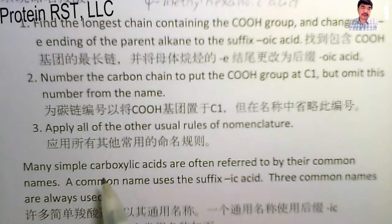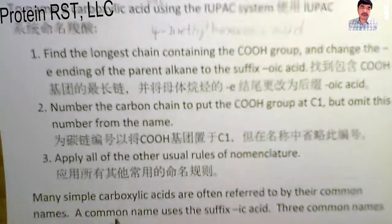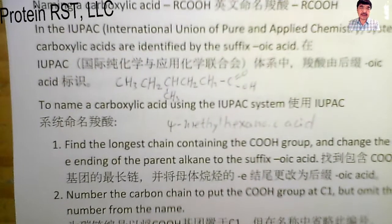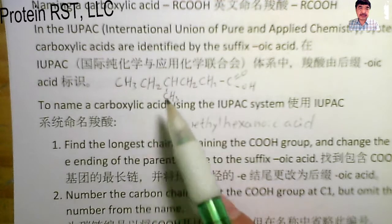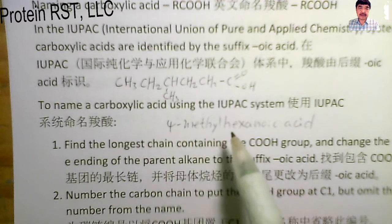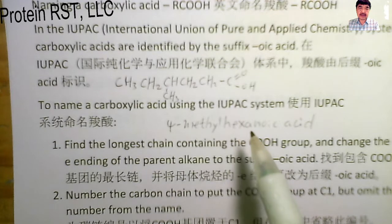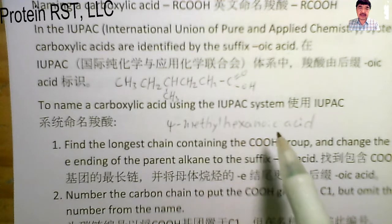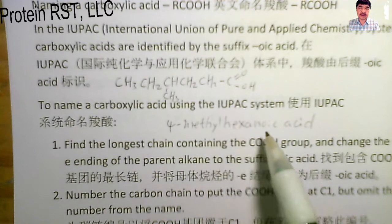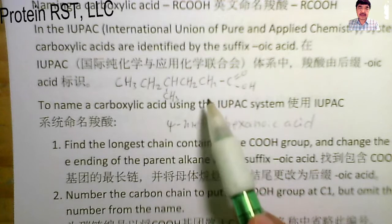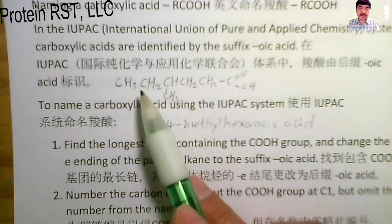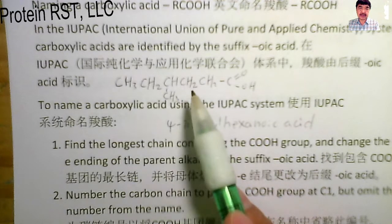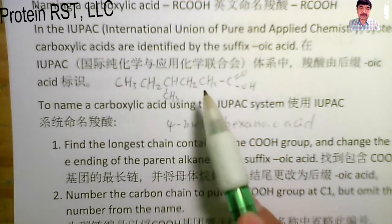Let's take a look at this example. This is 4-methylhexanoic acid. 'Hexanoic acid' means this carboxylic acid's parent chain has six carbons.